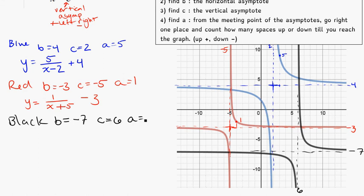And A, again starting from where the asymptotes cross, go to the right one, and then count how far up or down we have to go to get there. 1, 2. In this case, 2.